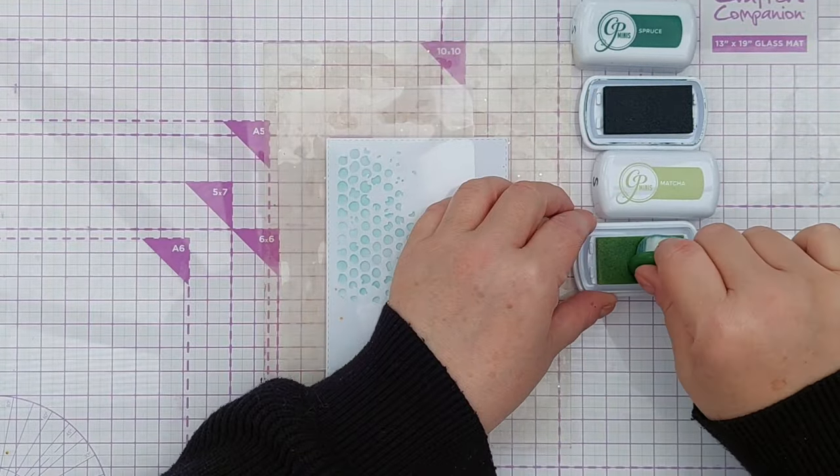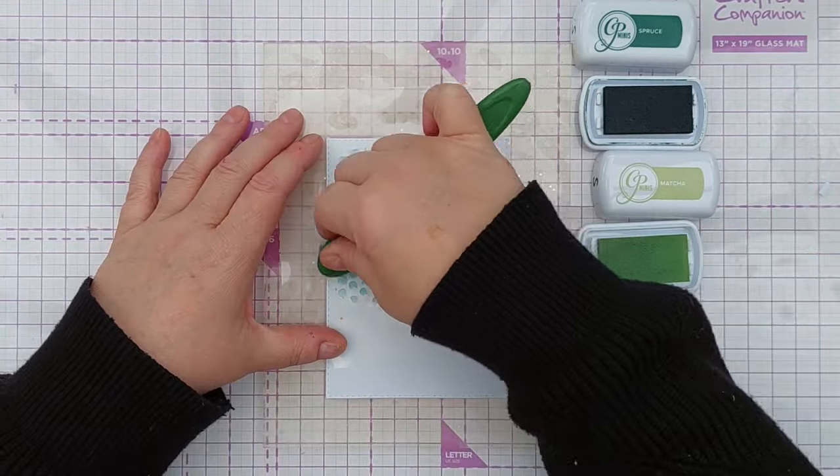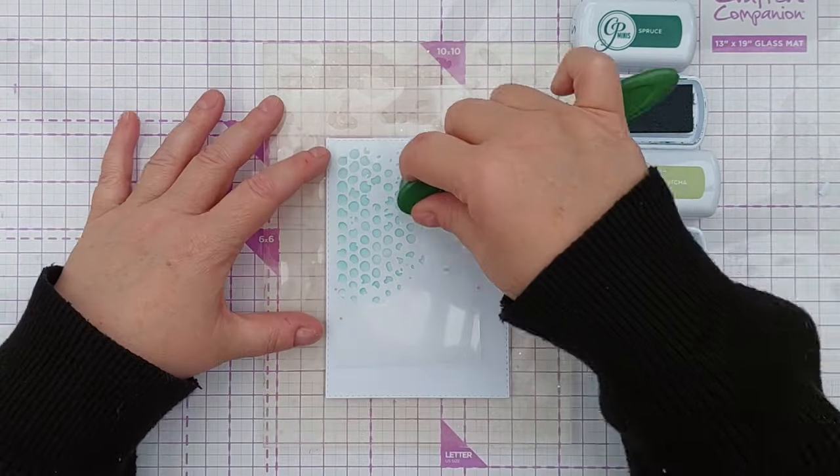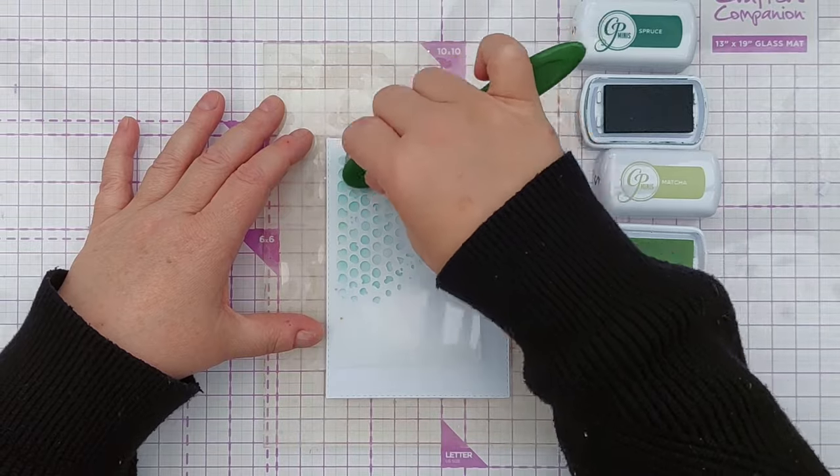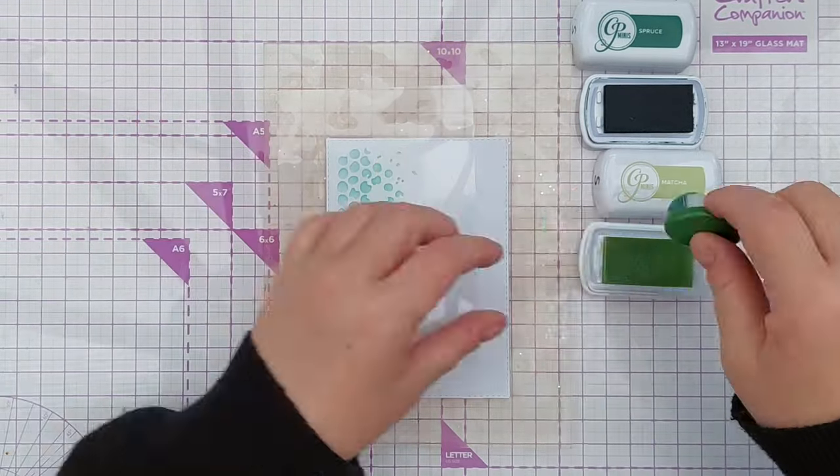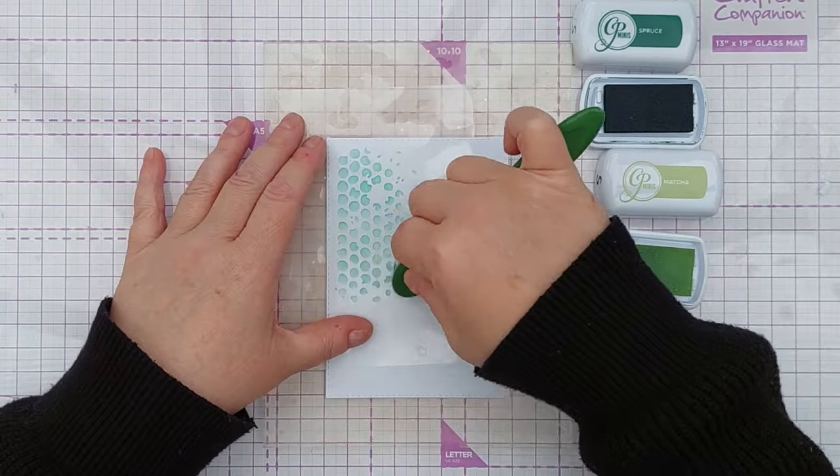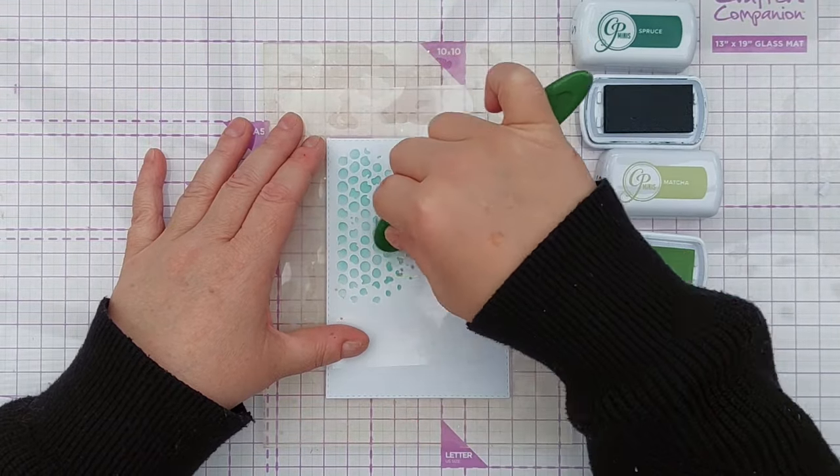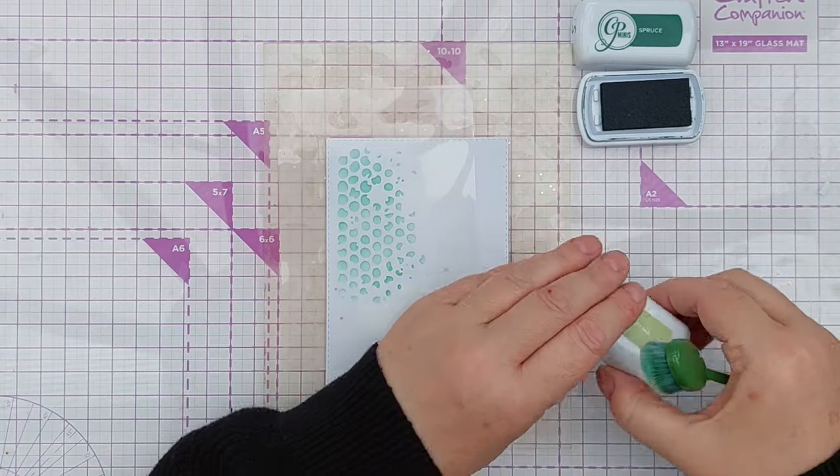So that's the Matcha. It's coming through a bit sprucey because I think there's a bit of spruce still on my sponge from earlier but I can build up my colours and bring in some Matcha. So I've got two greens there.